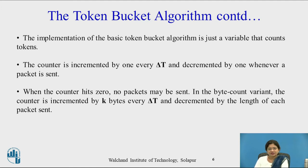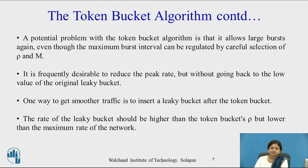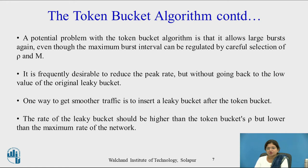In the byte-count variant, the counter is incremented by k bytes every delta-T and decremented by the length of each packet sent. A potential problem with the Token Bucket Algorithm is that it allows large bursts. Even though the maximum burst interval can be regulated by careful selection of P and M, it is frequently desirable to reduce the peak rate without going back to the low value of the original Leaky Bucket.